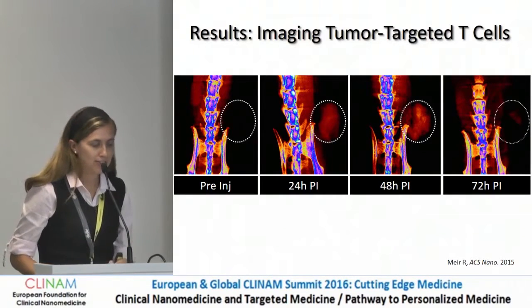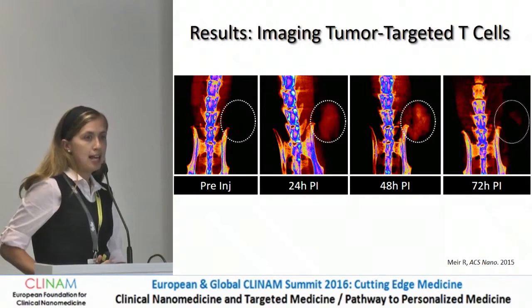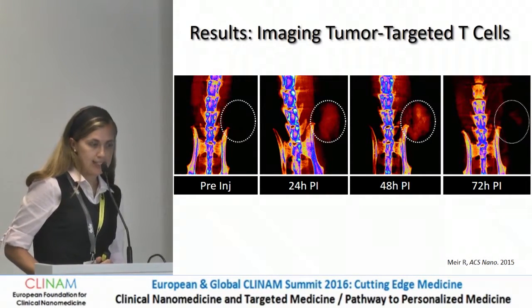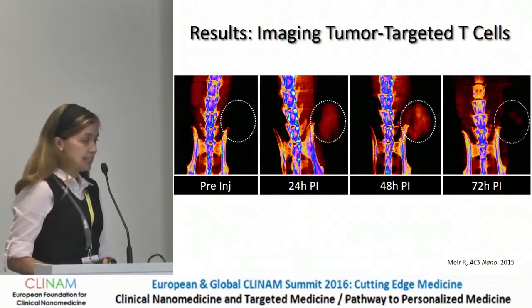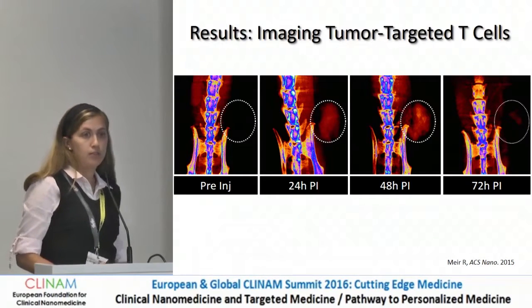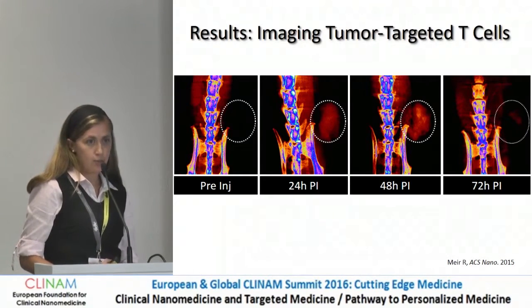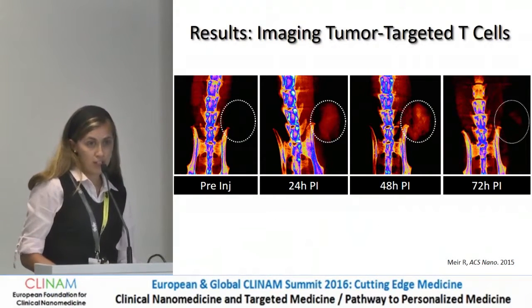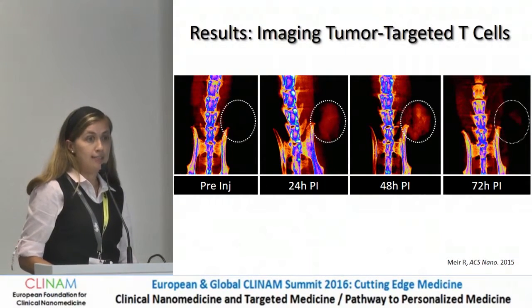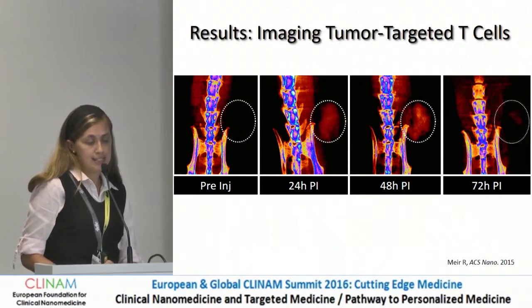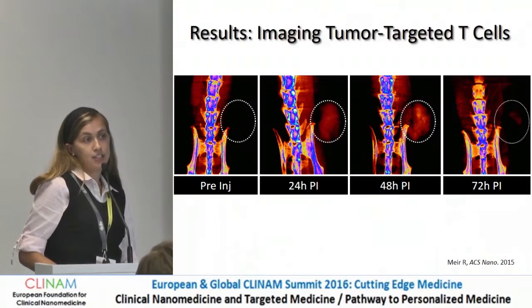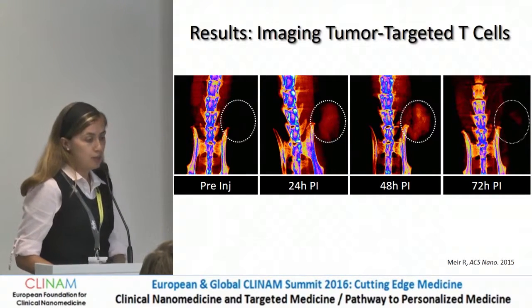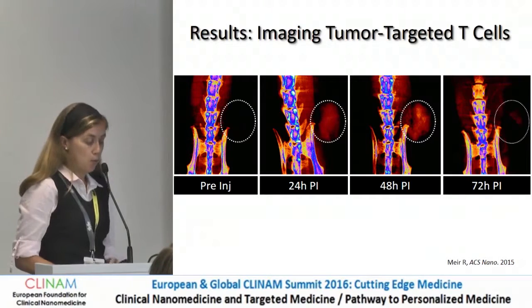Before injection of the cells, a small tumor cannot be observed by CT scan. But then, 24 hours post-injection, we could see a signal at the tumor site — this is due to the arrival of the labeled targeted T cells to the tumor. At 48 hours post-injection, the signal intensified because even more cells arrived at the tumor, and we could see a clear signal of the labeled targeted T cells at the tumor site. After this time point, the signal decreases, indicating that the T cells are starting to leave the tumor — so we have the kinetics and the homing of the T cells with a CT scan.